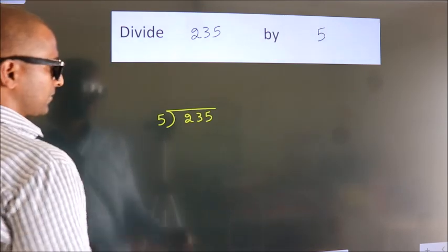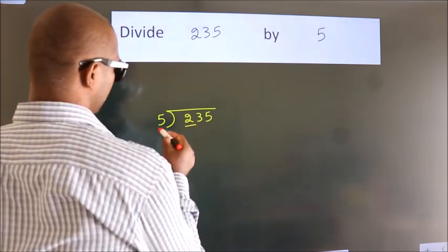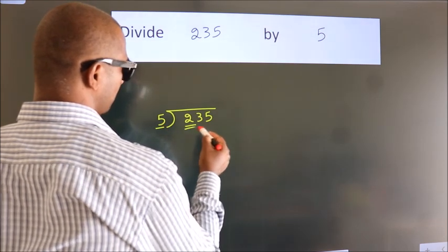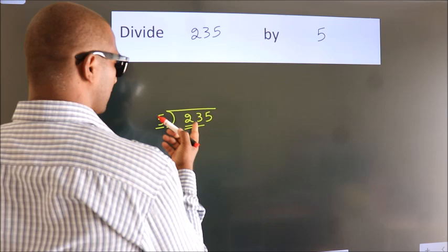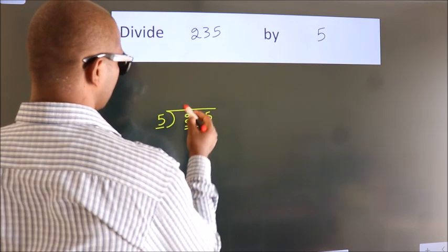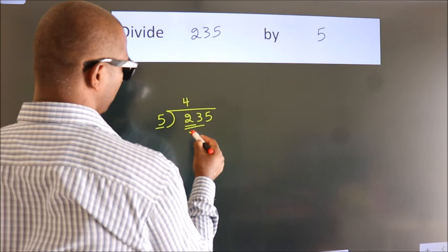Next, here we have 2, here 5. 2 is smaller than 5, so we should take 2 numbers: 23. A number close to 23 in the 5 table is 5 times 4 is 20.